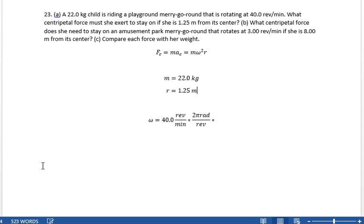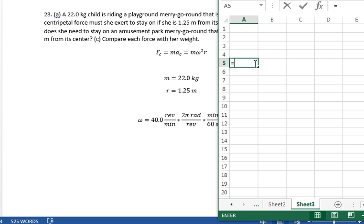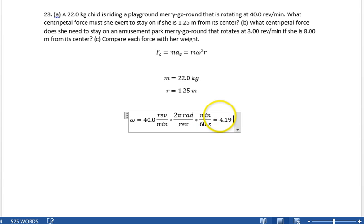let's make it look a tiny tad prettier, times minute per second for 60 seconds. So 40 times 2 pi divided by 60, 4.19 radians per second. Omega is 4.19 radians per second.